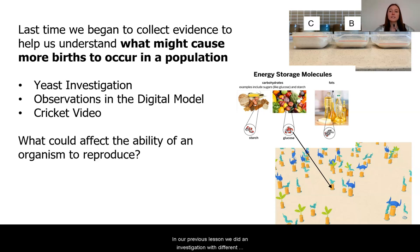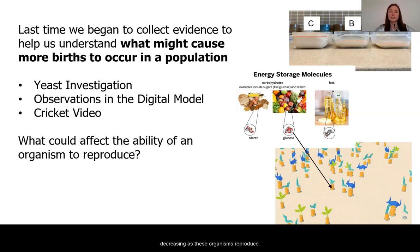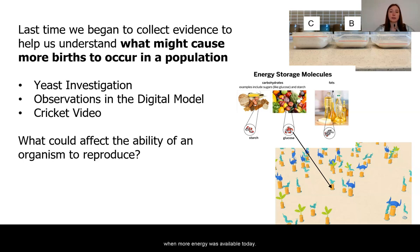In our previous lesson, we did an investigation with different types of energy with yeast and saw that when more energy was available, the yeast seemed to grow more. We also took observations in the digital model and noticed that there are energy tanks under each of these different organisms. These energy storage molecules are changing in number — they are decreasing as these organisms were reproducing. We also saw that crickets, just like the yeast, were producing more births when more energy was available to them.